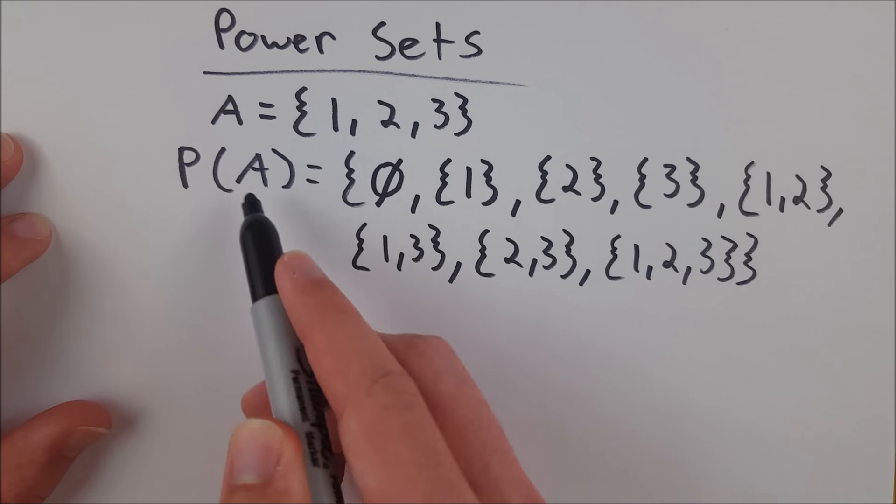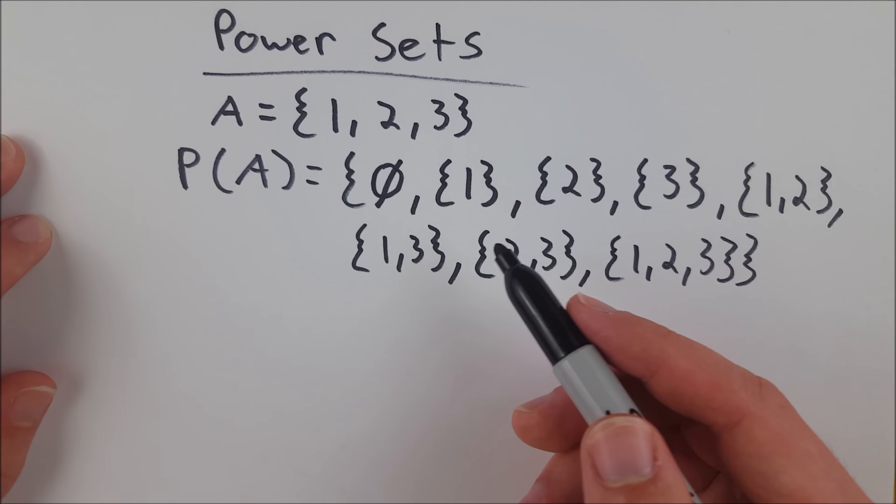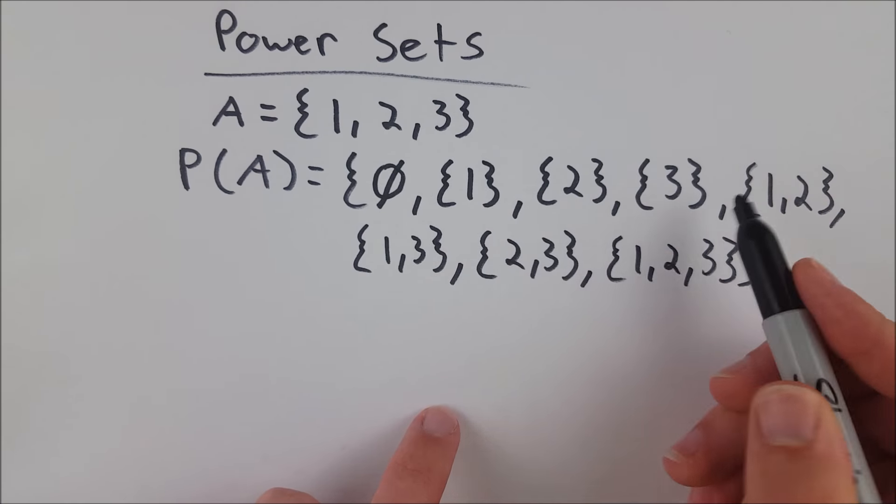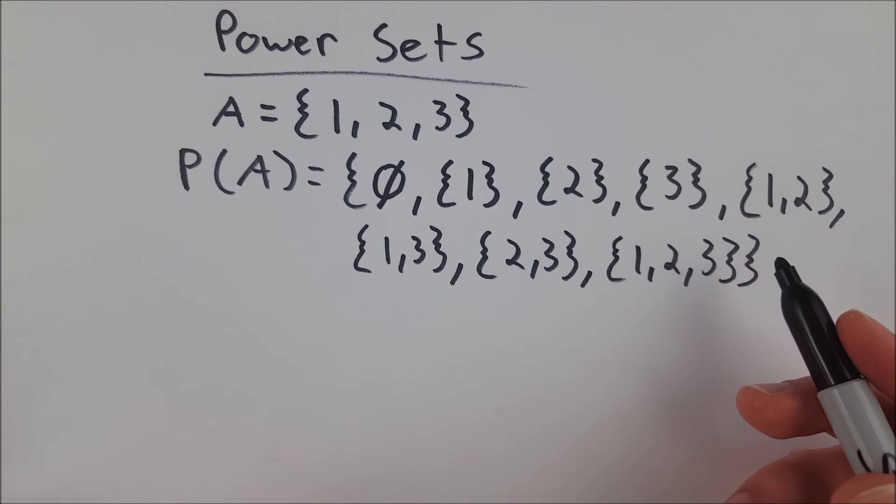So in this set, the power set of A is every subset of A. We have the empty set, which is a subset. And then we have all the sets that contain elements present in A. One, two, three, one, two.